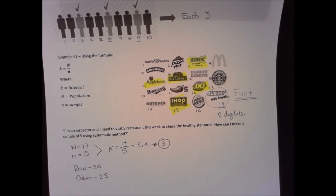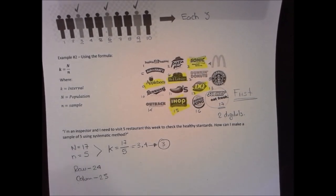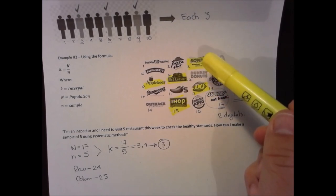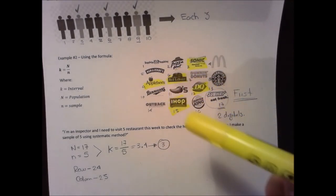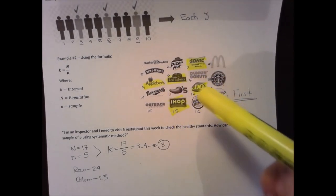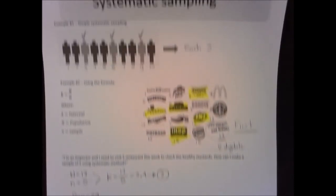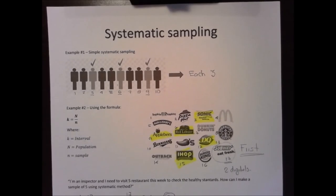The sample is going to be: For, By, Sonic, Red Luster, Applebee's, IHOP, and Dairy Queen. And this is the systematic sampling method.